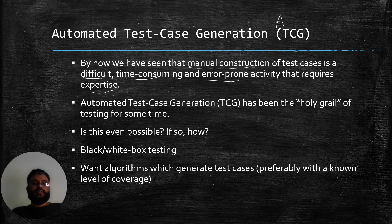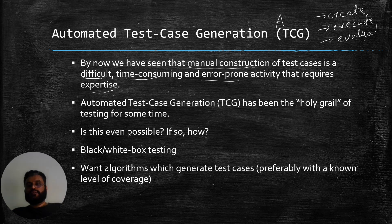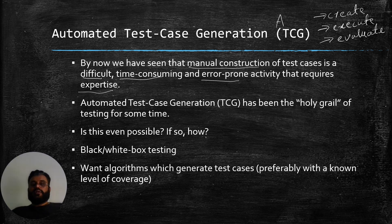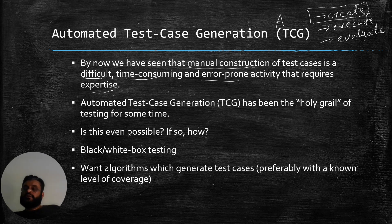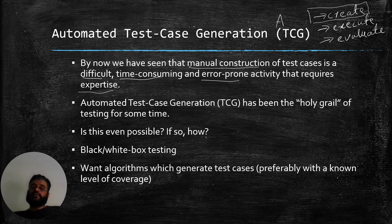There are three main phases in any software testing: you need to create the tests, you need to execute these tests, and then you need to evaluate or assign verdicts on these tests. At the moment, we are focusing on the first one — how we can automatically create test cases. You can create tests automatically, execute tests automatically, and evaluate them automatically. A testing tool will be considered very good if it performs all these phases automatically, but in practice there are not many tools that do.